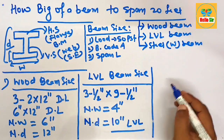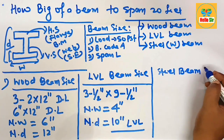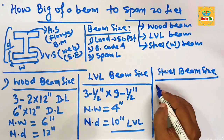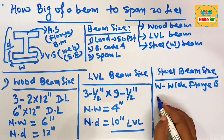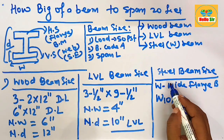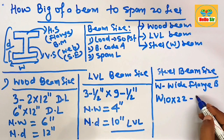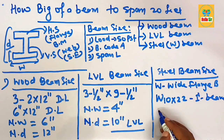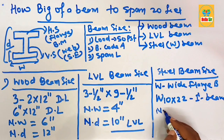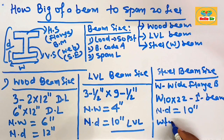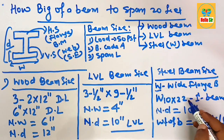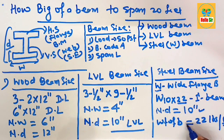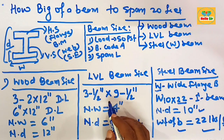For the steel beam size required to span 20 feet, you can use an American wide flange beam written as W10×22. This means you can use a W10×22 steel beam — also known as an I-beam — for a 20-foot span. Here, W indicates wide flange beam, 10 indicates the nominal depth in inches, and 22 indicates the weight of the beam in pounds per foot. These are the three different beam sizes required to span 20 feet.